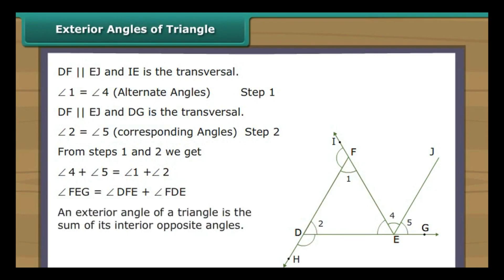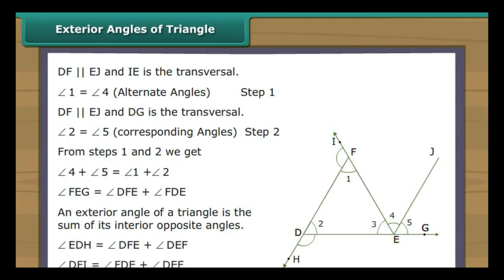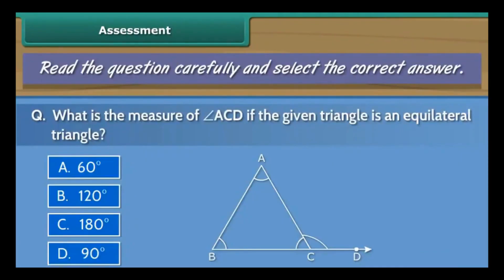Therefore, an exterior angle of a triangle is the sum of its interior opposite angles. Similarly, exterior angle EDH equals angle DFE plus angle DEF, and exterior angle DFI equals angle FDE plus angle DEF.